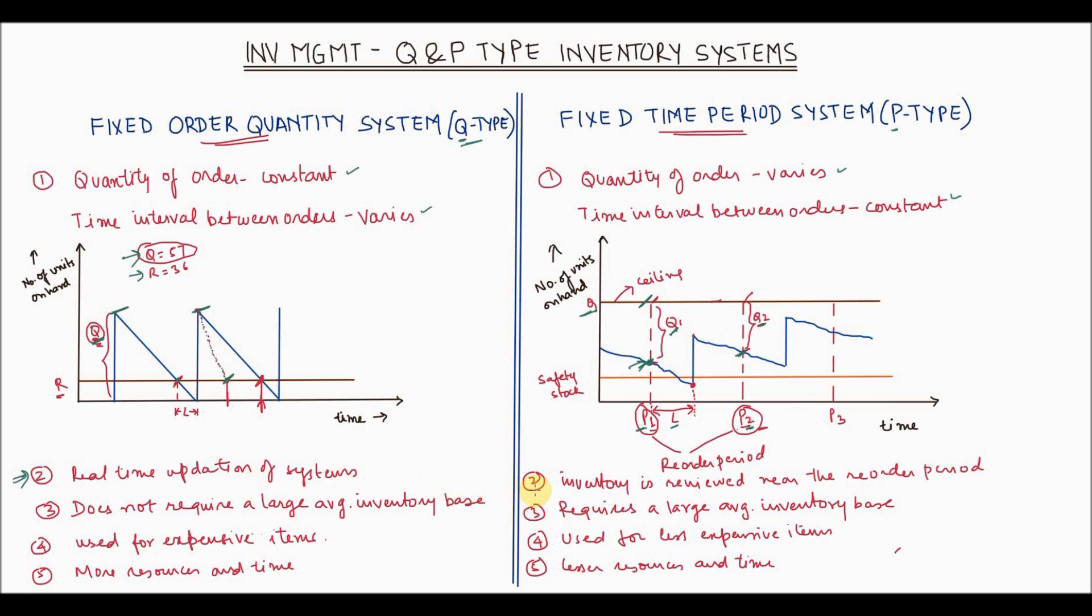Whereas in the P type of system, inventory is reviewed near the reorder period. So once the P1 time is coming, just prior to that the inventory is counted and based on that the order is placed. So it is not real time but it is prior to the reorder period.